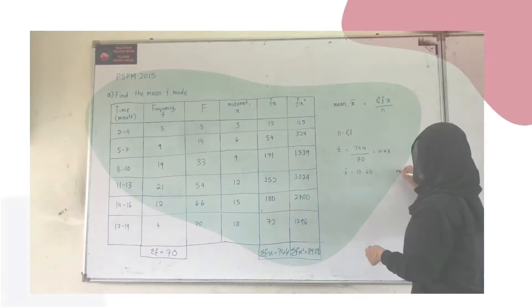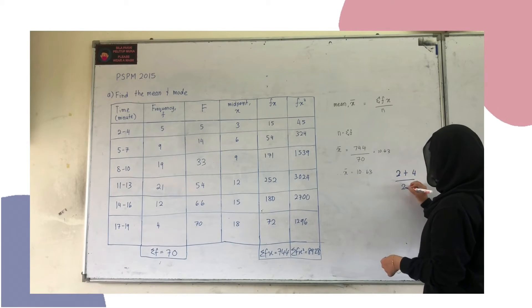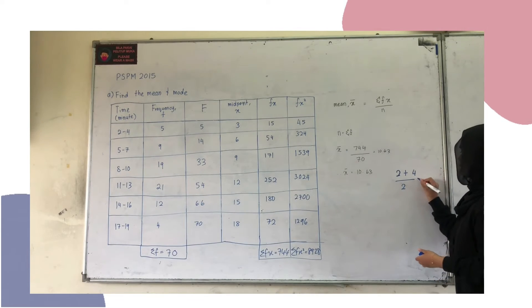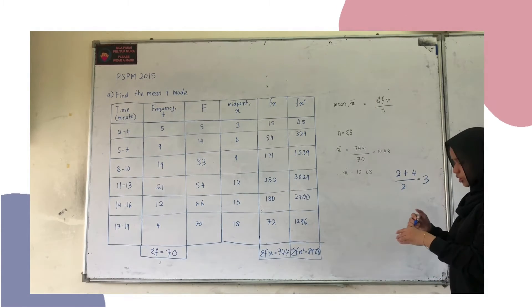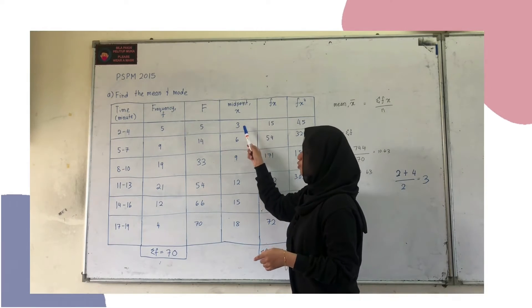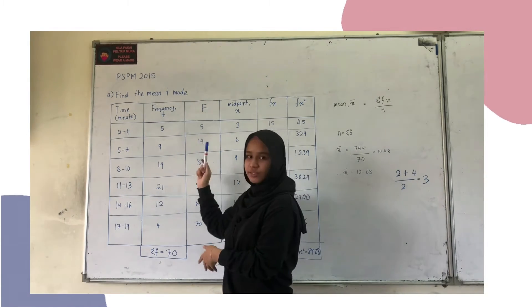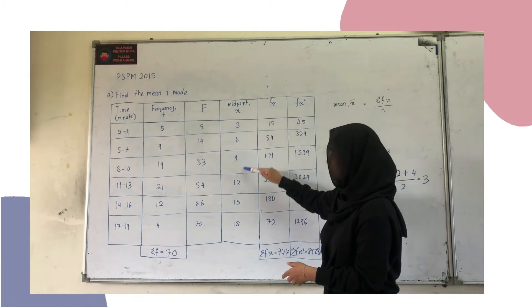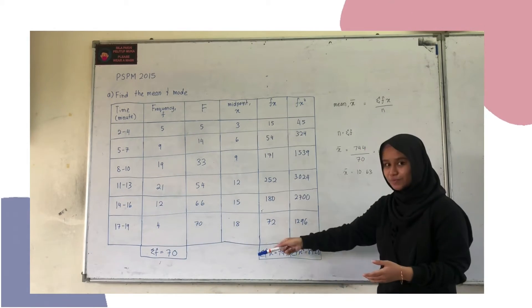For example, 2 plus 4 over 2 equals 3. So the midpoint for that class is 3. You do the same thing for all other classes in the table to get all midpoints.